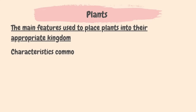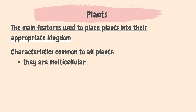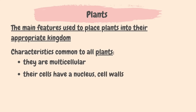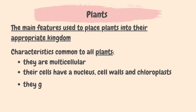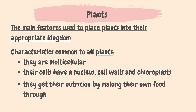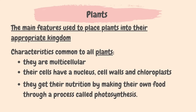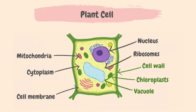The next kingdom is plants. Main features of all plants are: they are multicellular; their cells contain a nucleus, chloroplasts and cell walls made from cellulose; and they get their nutrition by making their own food through a process called photosynthesis. In a plant cell, in addition to what an animal cell has, you'll notice a cell wall and chloroplasts.